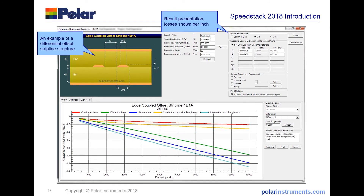Another example here of a differential offset strip line. In this case, you can see we're showing the result presentation per inch, but you could choose per meter or per length of line for the particular structure you're interested in.